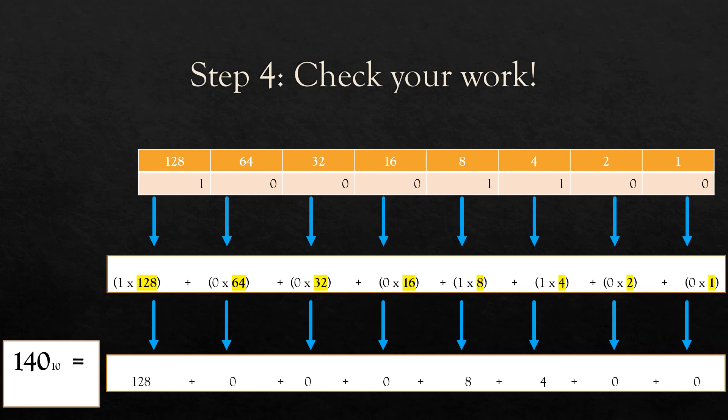Step 4 — it's time to check your work. You want to be 100% correct that you converted properly. To check, we follow the steps for converting binary to denary: multiply each binary digit by its binary number line weight and add them together. 0×1 is 0, 0×2 is 0, plus 1×4, plus 1×8, plus 0×16, plus 0×32, plus 0×64, plus 1×128, giving us a total of 140. Good job.